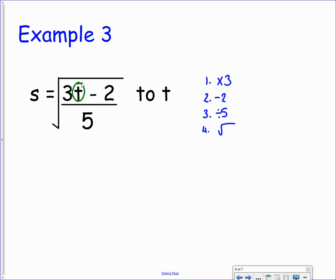So to undo our square root, we want to square both sides. If we square the s, we're going to get s squared. Squaring the square root just reveals what's underneath it, so we get 3t minus 2 over 5. That's the first thing gone.